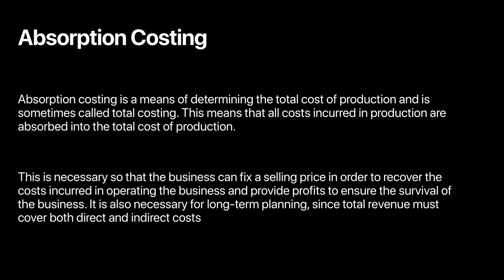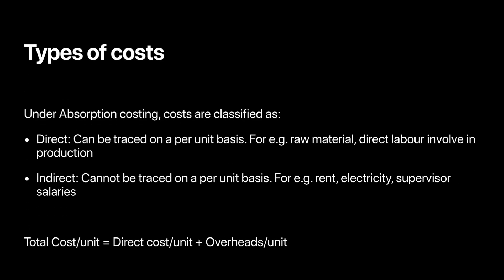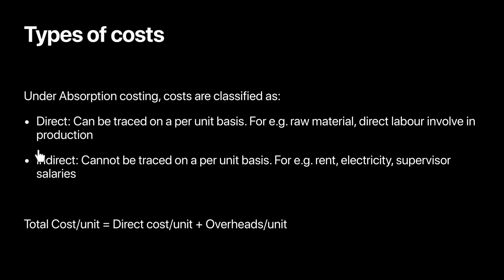Absorption costing believes that costs should be classified as direct cost or indirect cost. Direct costs are those costs that can be traced on a per unit basis — if you can calculate the cost for every single unit produced, that cost is classified as direct cost. Examples include raw material, where you know how much material is required to make one single unit, and direct labor, where you know how many hours labor will take and the hourly wage rate.